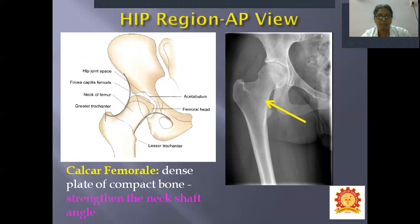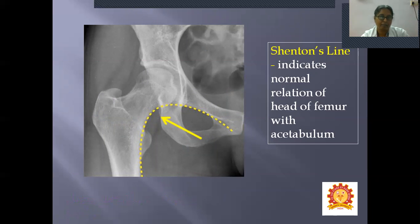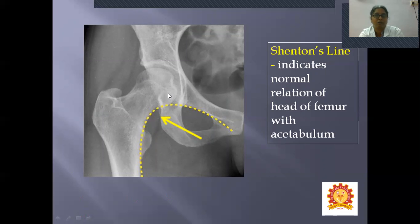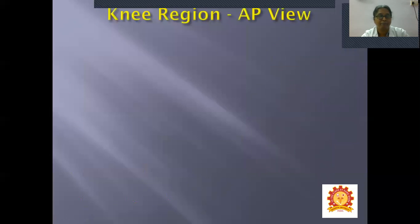Calcar femorale is a dense plate of compact bone which strengthens the neck-shaft angle of the femur. Shenton's line is a dotted line indicating the normal relationship of the head of the femur with the acetabulum. If Shenton's line is intact, it confirms the normal relationship of the femoral head with the acetabulum. That concludes the hip region.